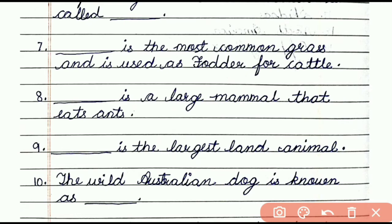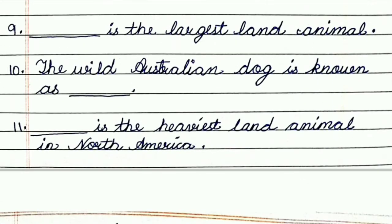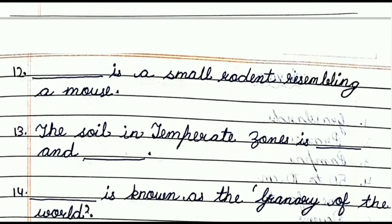Question number ten: the wild Australian dog is known as dash. The answer is dingo. Question number eleven: dash is the heaviest land animal in North America. The answer is bison. Question number twelve: dash is a small rodent resembling a mouse. The answer is vole.